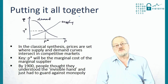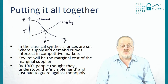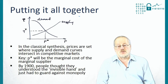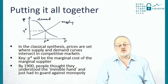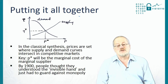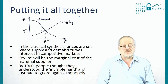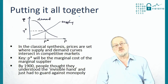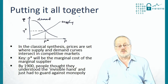If the marginal cost of the marginal supplier is zero, then the price will be zero. In a classical market, of course, the price is non-zero. By 1900, people thought they had understood the invisible hand, and the main concern was how to guard against monopoly. There were already some monopolies, such as the railways, which caused significant problems.